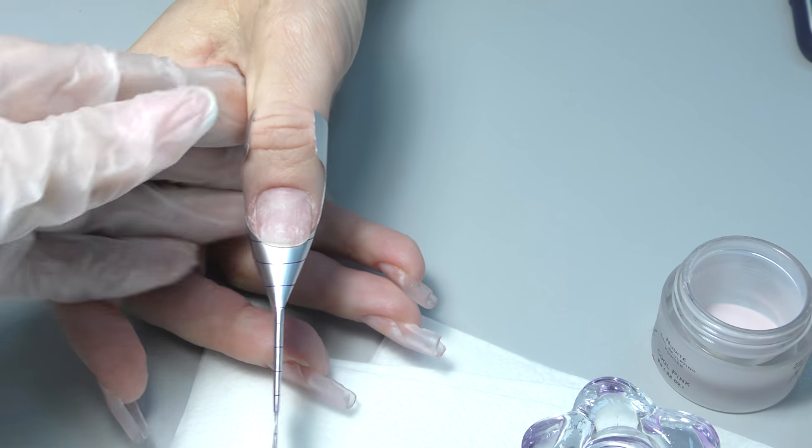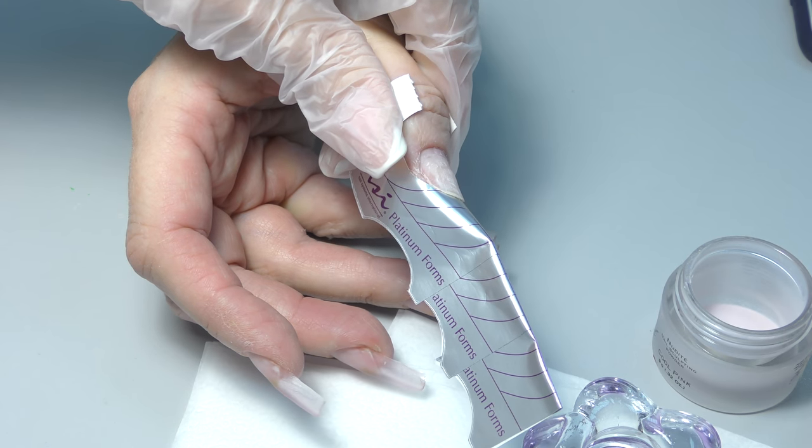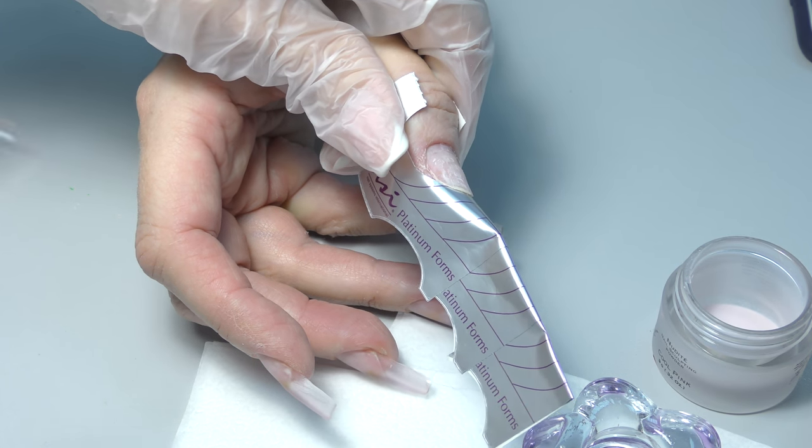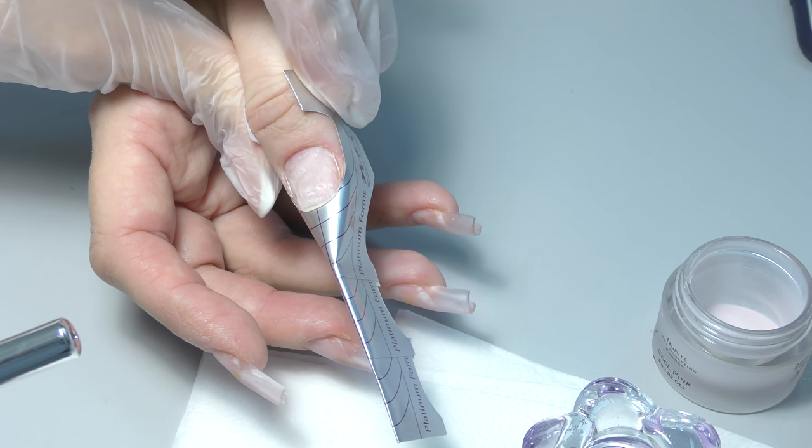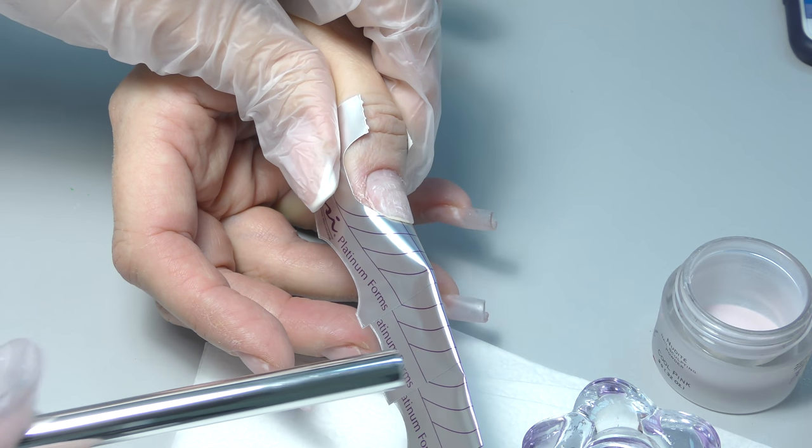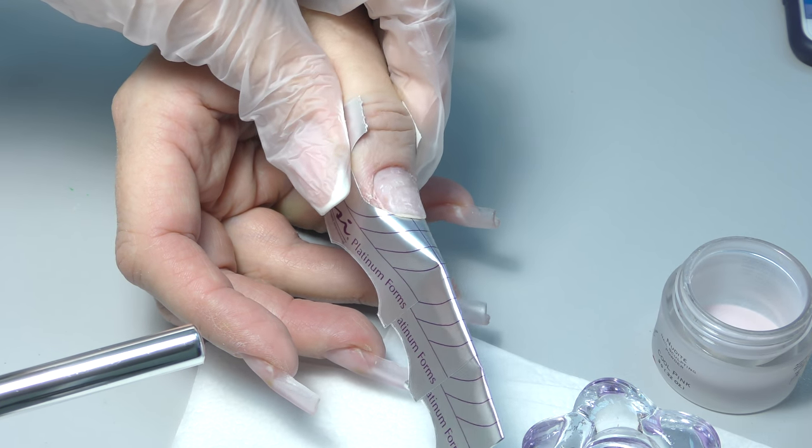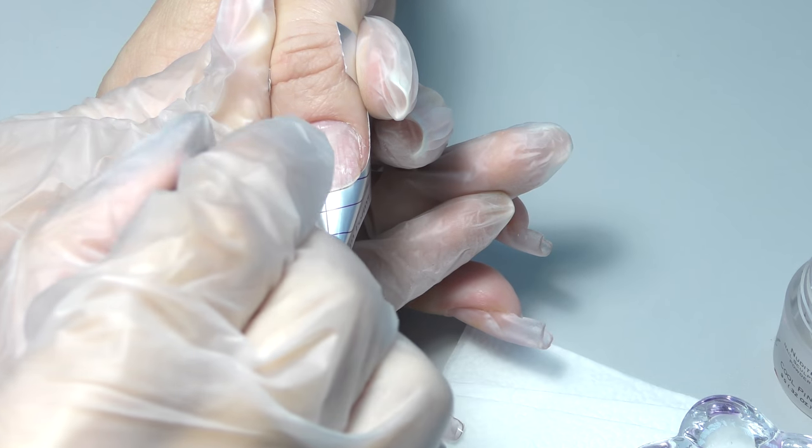I prepped the natural nail and I don't have stiletto forms at the moment. That's why I took three NSI Platinum forms and stuck them together. Also, I folded them in the center. As you can see, first we have a triangle then it's folded. Also, I used pencil to draw some spider web wings so it will be easier for me to apply product.